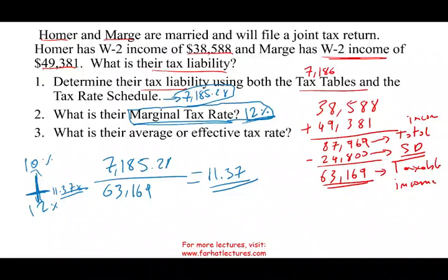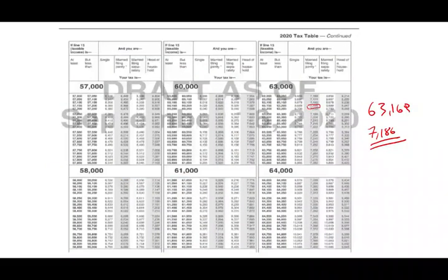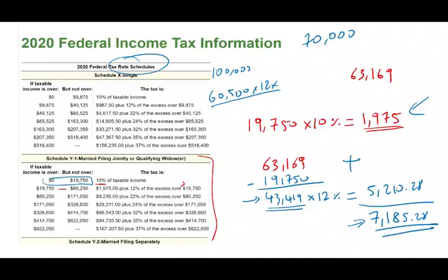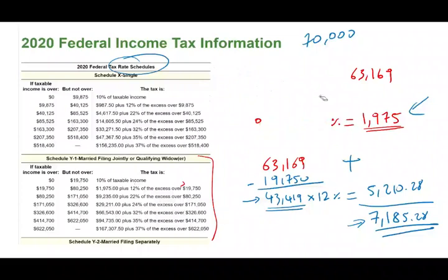That's basically how we do the computation. How do you learn to do this? You work exercises and practice problems. I just showed you how to do this, so you have to practice more exercises using the tables. For example, if someone's taxable income is $70,000, you'd go through the same steps.